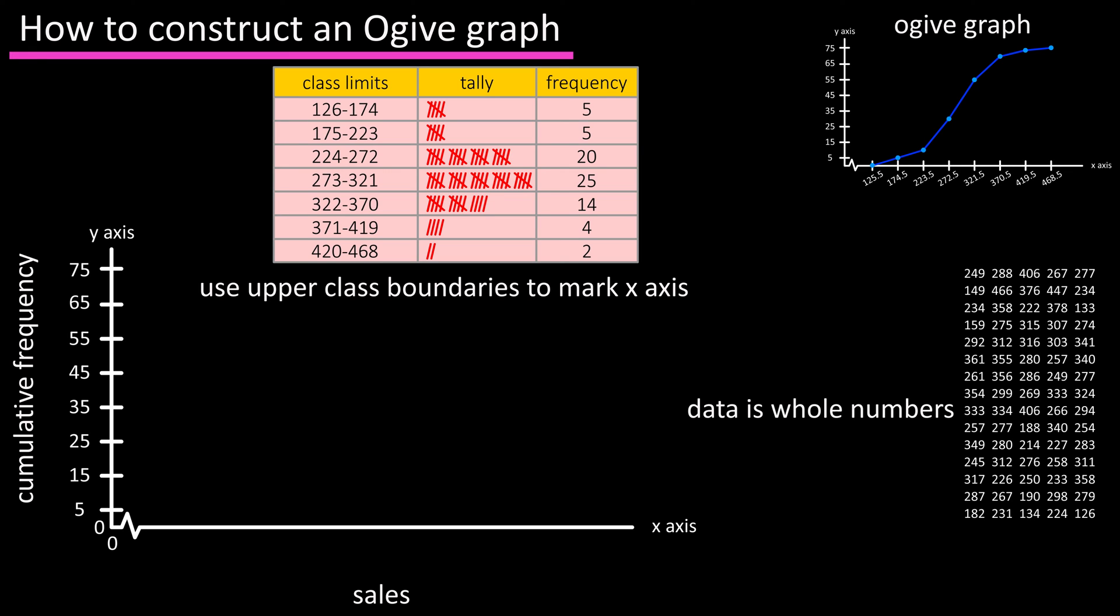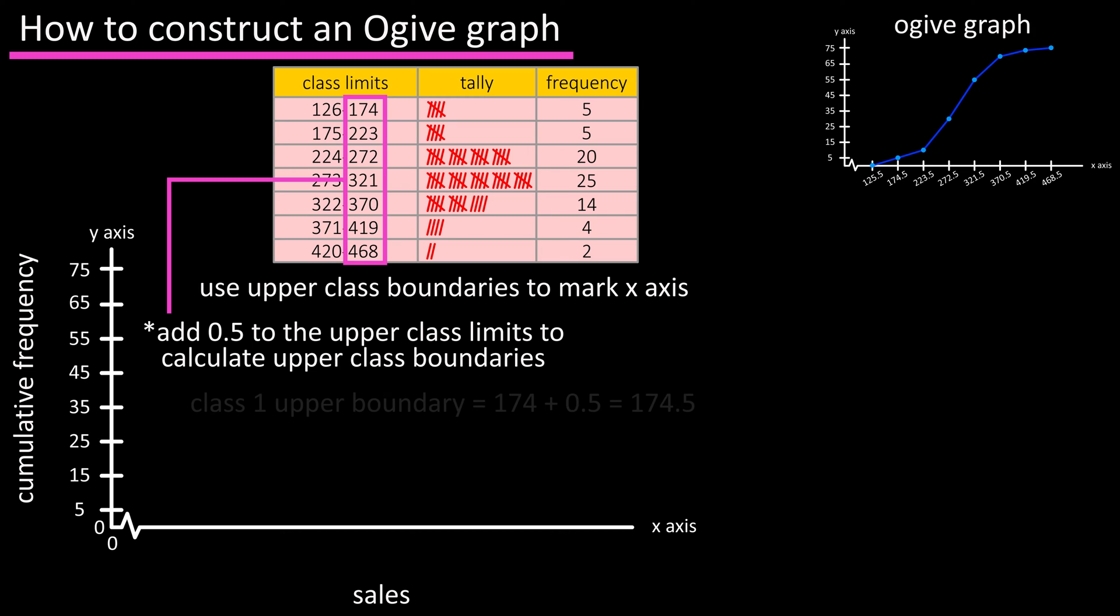Since our data is all whole numbers, we can simply add 0.5 to the upper limits of each class. So for class one we get 174 plus 0.5, which equals 174.5. For class two we get 223 plus 0.5, which equals 223.5.